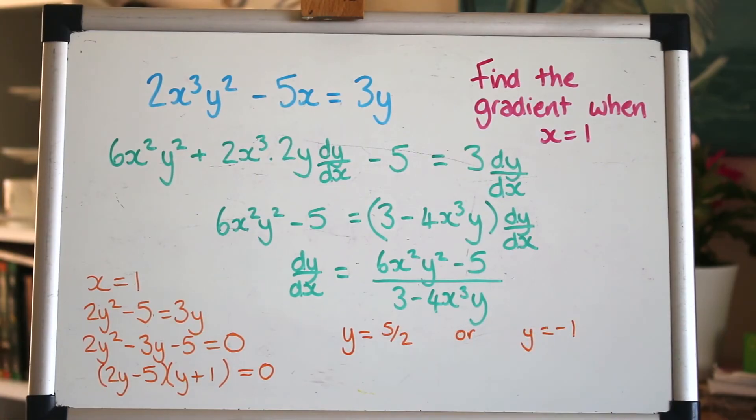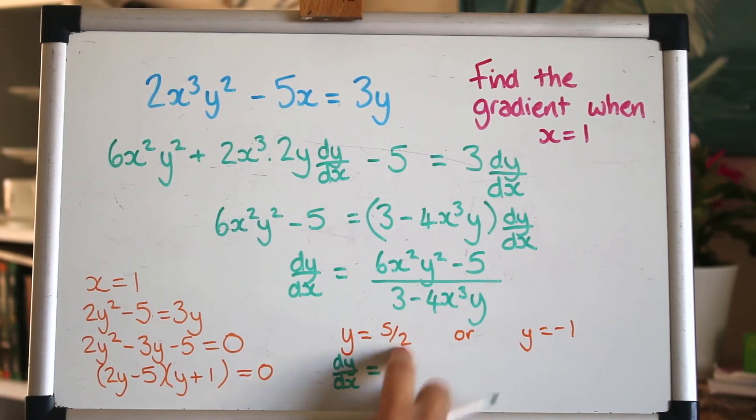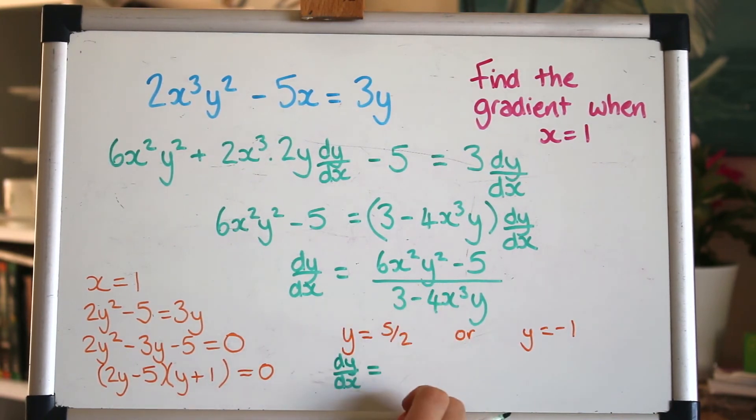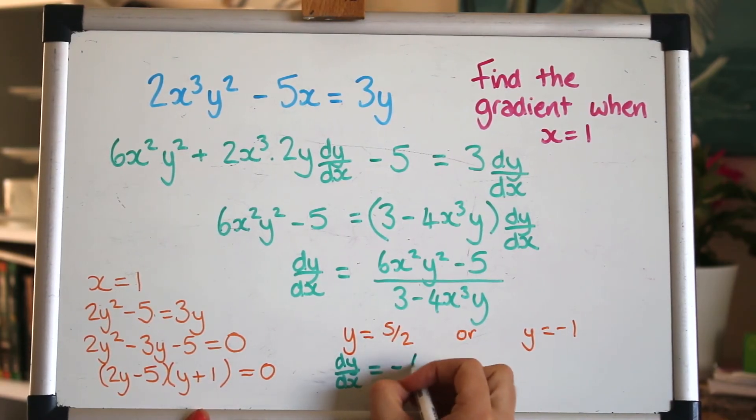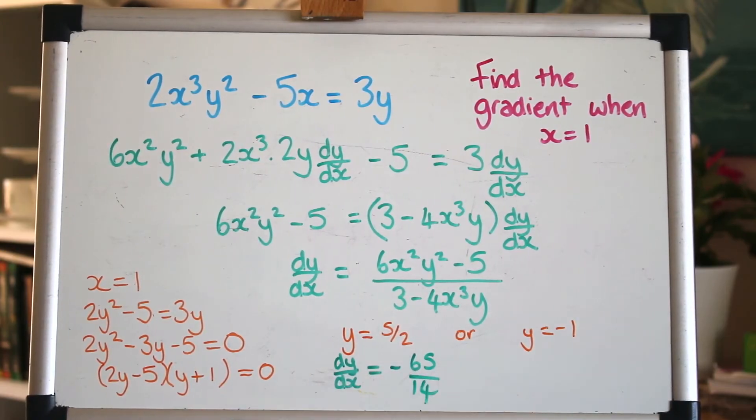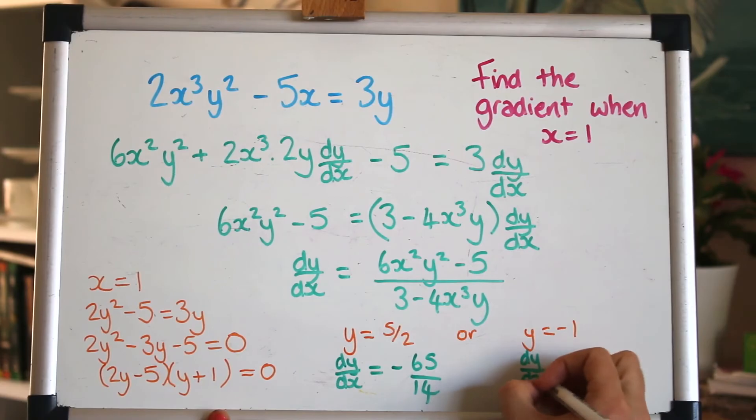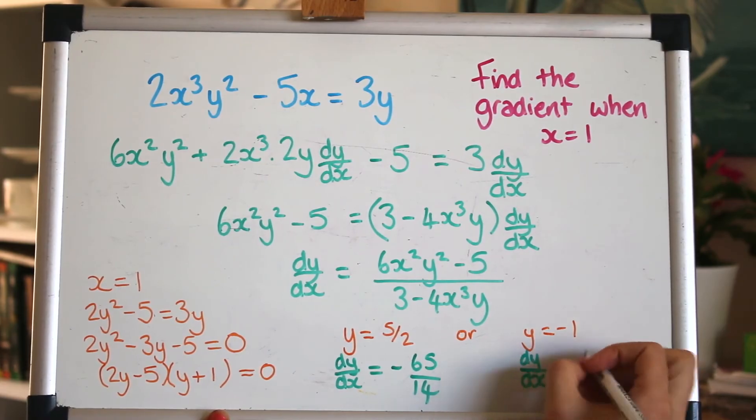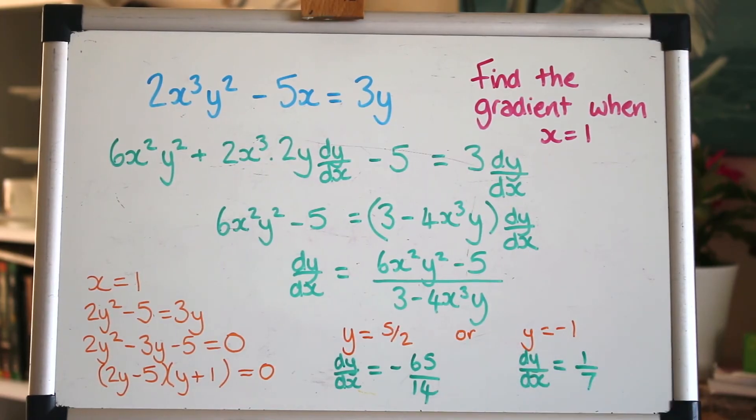So in each of those cases I'll get the gradient. I've run out of space but we're just putting these values into the gradient now so x is 1 and for this one y is 5 over 2 or 2 and a half. So just put that all into the calculator and I get minus 65 over 14. Again this one putting x is 1 and y is minus 1 into all of that and I get that the gradient is a seventh. Fab! Well done if you got that right. Let's move on to one more question now.